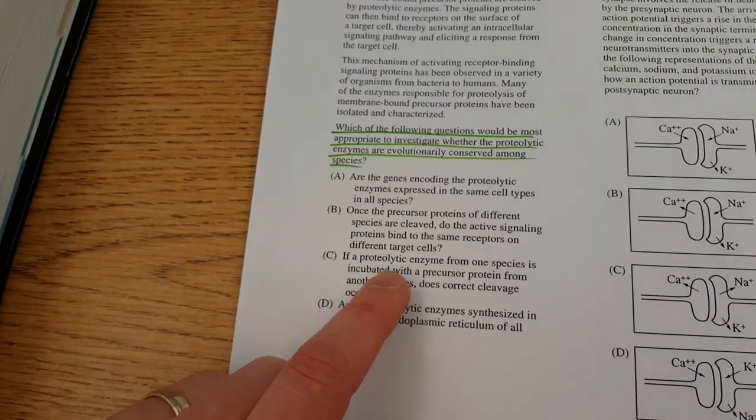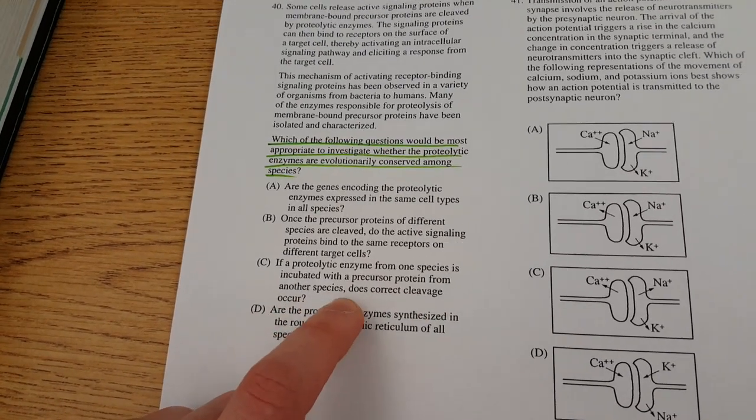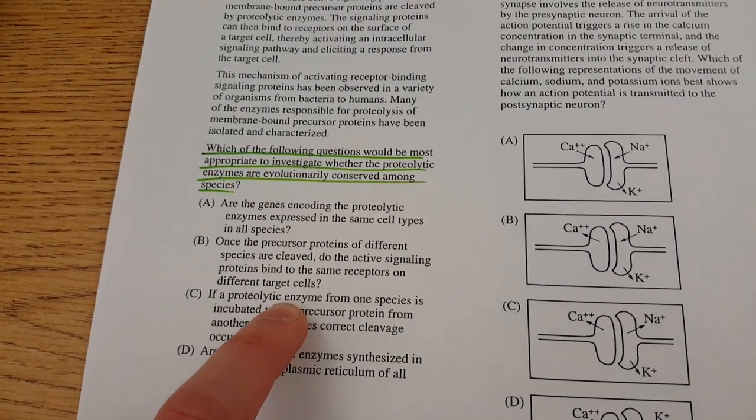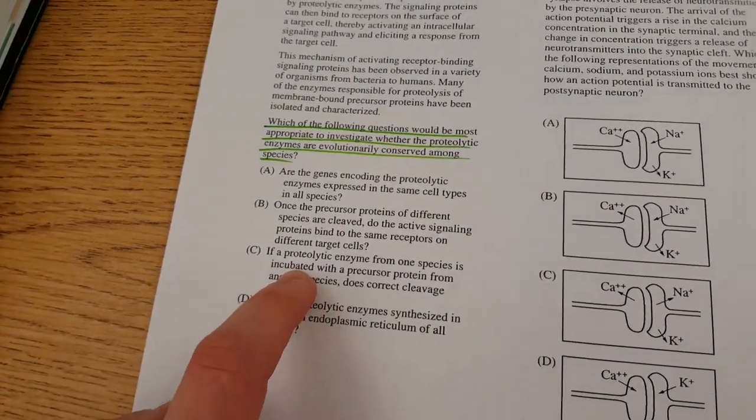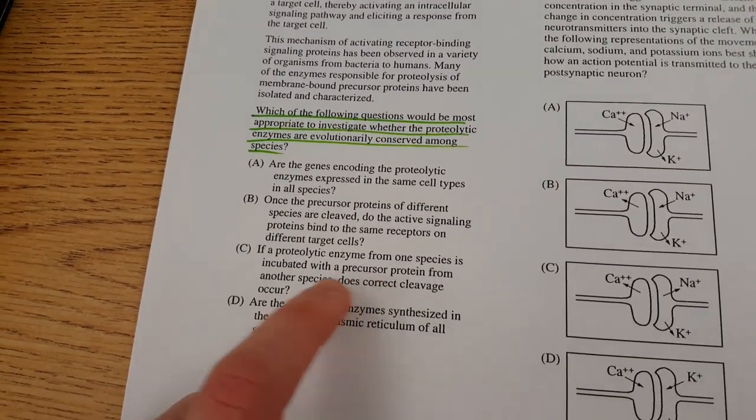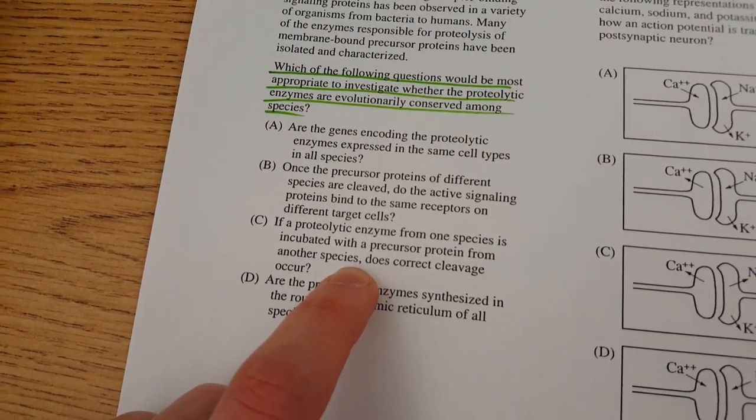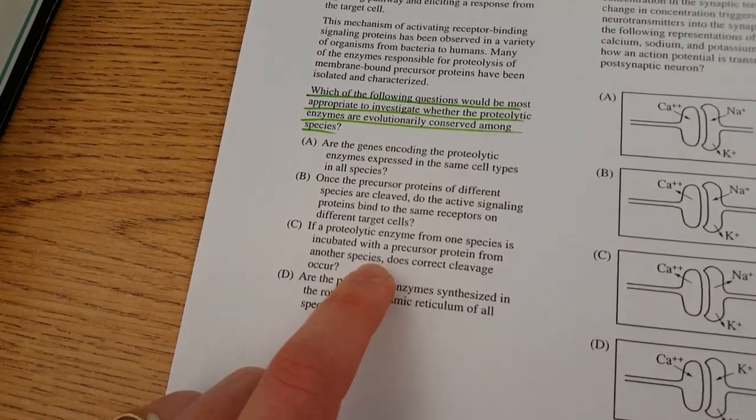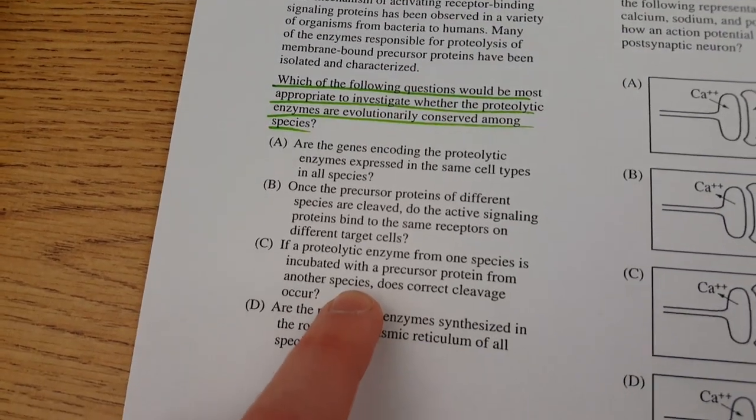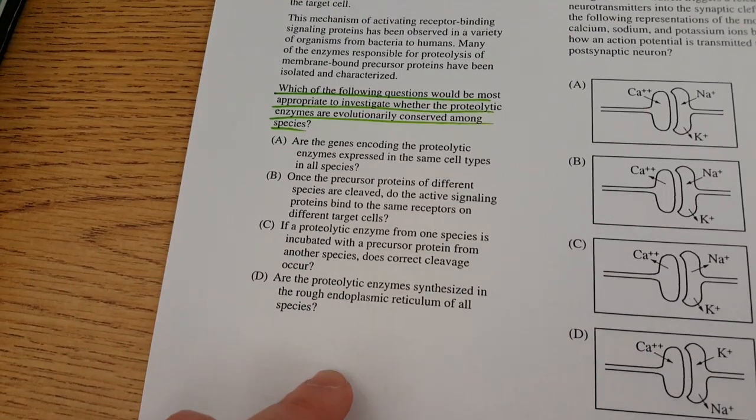So let's go to C. If a proteolytic enzyme from one species is incubated with a precursor protein from another species, does correct cleavage occur? This sounds really interesting. If you took the enzyme, which you think is conserved, and you incubated or simply put it in a situation where it's going to get a hold of that precursor protein, which is its substrate from another species, would the two interact as they're supposed to in both of their normal environments? And if they did, then that would mean that they were conserved. And if they didn't, that would mean that they're not conserved. So this seems like a pretty good question to ask and a pretty good investigation to do. So again, C is pretty good. And again, we're still dealing with A as a potential answer as well.